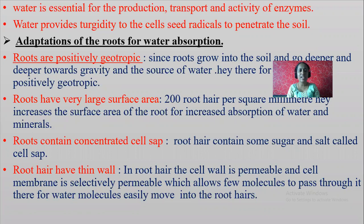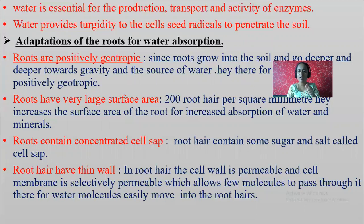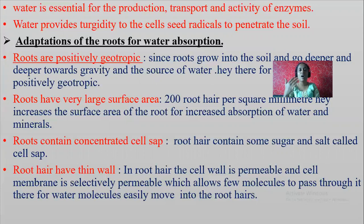Root hair has a thin wall. In root hair, the cell wall is permeable and the cell membrane is selectively permeable. The cell wall is freely permeable — it allows each and every substance to pass through it. But the cell membrane is selectively permeable — it allows only few substances to move inside or outside the cell.